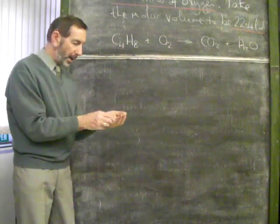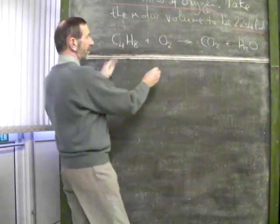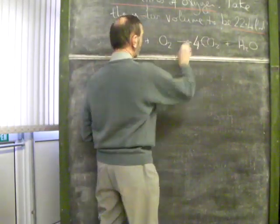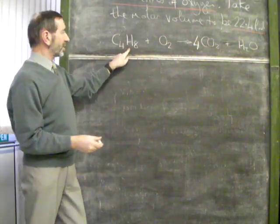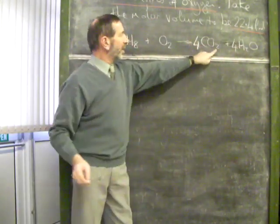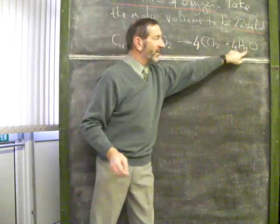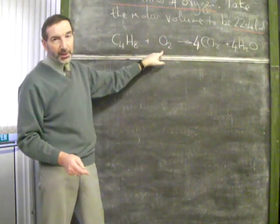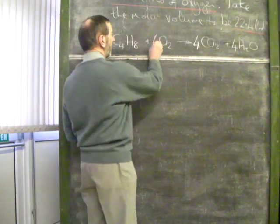We've given an equation which you can balance. 4 carbons to begin with, 4 carbons at the end. 8 hydrogens to start with, 8 hydrogens at the end. There are 8 oxygens here and a further 4, that's 12 oxygens in total. We must have started with 12 oxygens. There. 6 times 2 is 12.